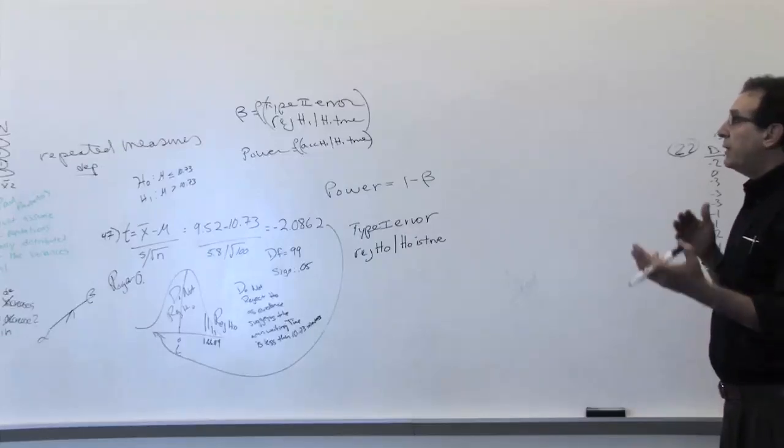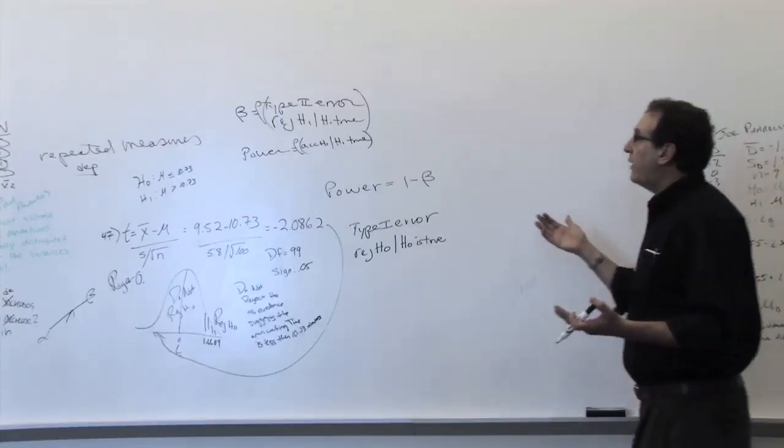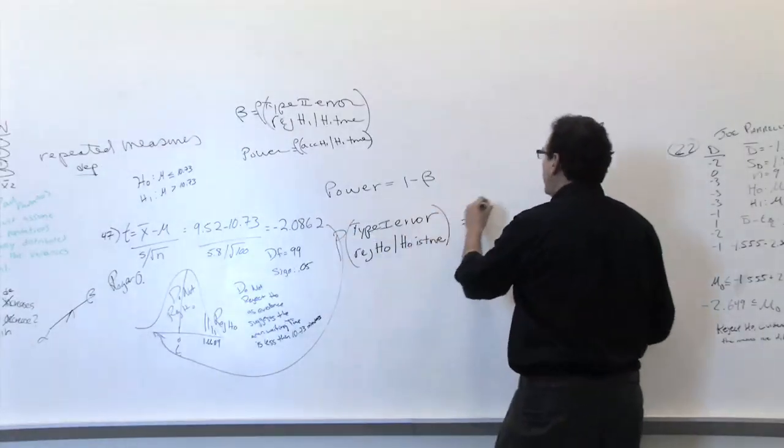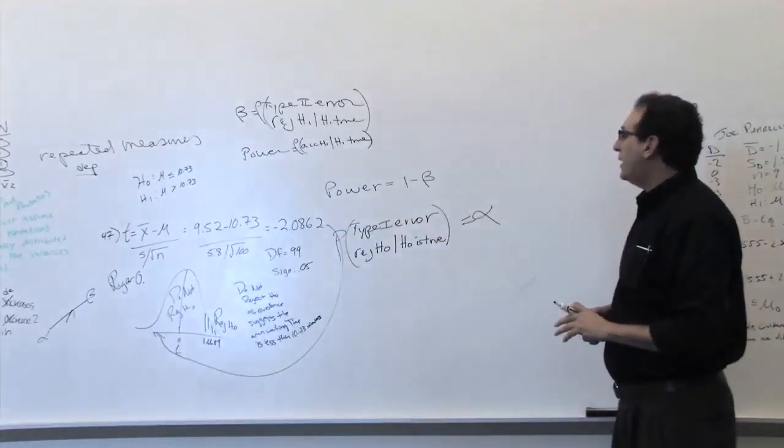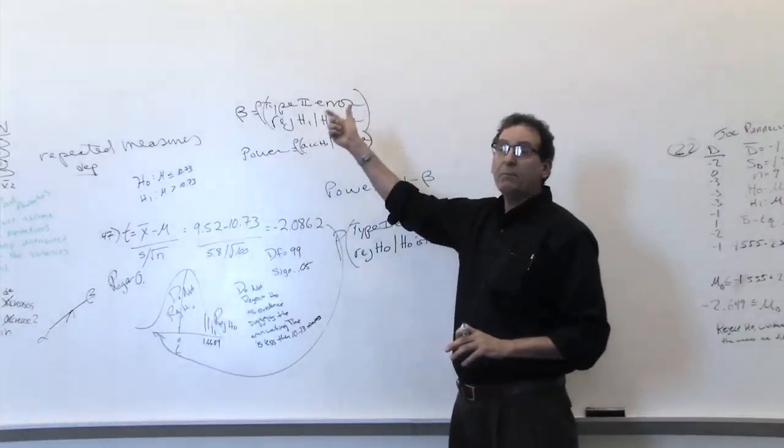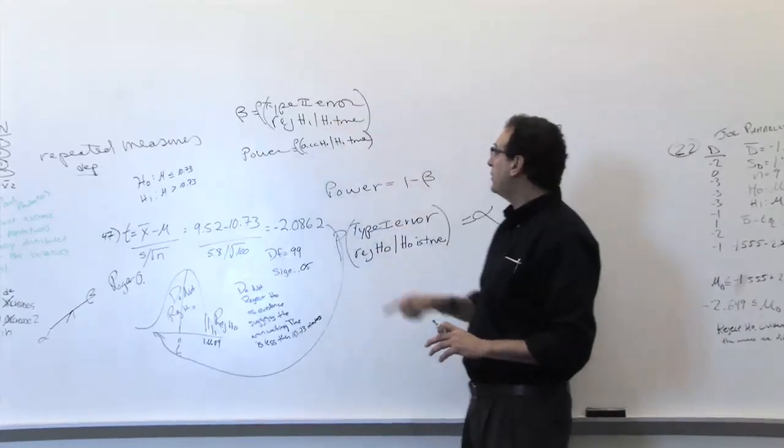Before we discuss the relationship between alpha and beta, let's define alpha. Alpha is the probability of making a type 1 error, which means rejecting H0 when H0 is true. And beta is the flip side of that, rejecting H1 when H1 is true.